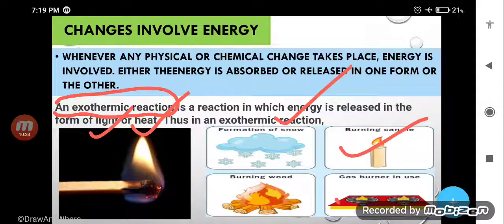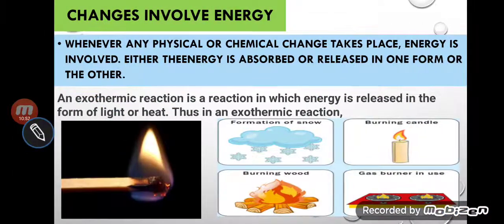Burning of candle, burning of cooking stove, burning of firewood — these are examples of exothermic reactions. One more example is the formation of snow. How does snow form? When water releases energy, it cools down and changes into solid form. These are the examples of exothermic reactions. Please note down these examples in your copy.